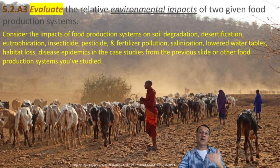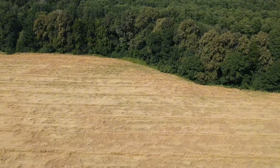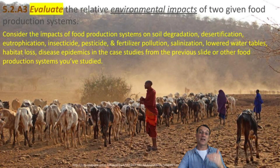Terrestrial food production can have significant environmental impacts, including soil erosion, water pollution from fertilizers and pesticides, habitat loss, and contributions to climate change. The severity of these impacts often depends on the farming methods used. By understanding these effects, we can build more sustainable farming practices that produce the food we need while minimizing environmental damage.